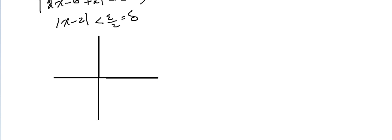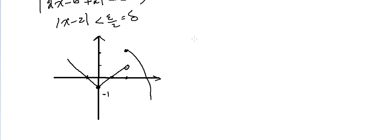Setting up the diagram with the Y axis and X axis. We have minus 1 and 1 on the Y axis, and the values 1 and 2 on the X axis. This is the graph of G(X). The instructor begins drawing the function and asks: find the limit of G(X) as X approaches 2 from the right.